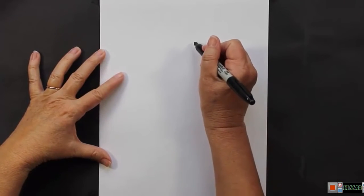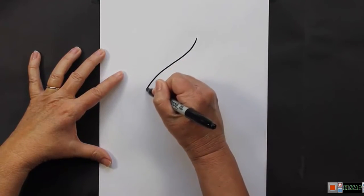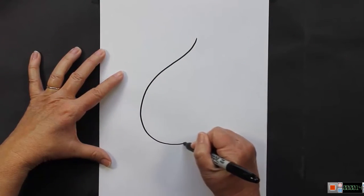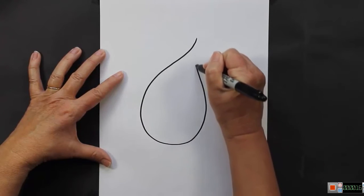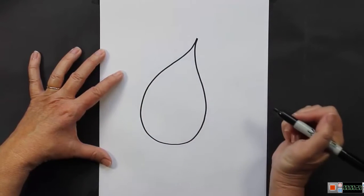The first thing that you're going to want to do is make a shape that looks almost like a water drop or a teardrop. So it's a curved line in, curved line out, make it kind of fat right here, and then bring it back up to a point.